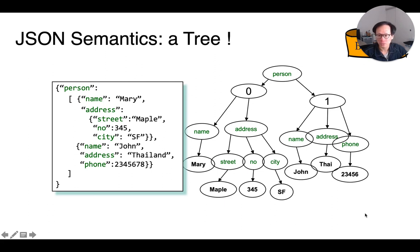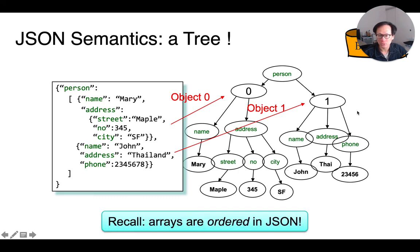In this document, we have two person objects here. The first one is about Mary, and the second one is about John. Remember that objects in an array in JSON are all ordered. Hence, we represent that using two special index nodes in the tree here shown in the right.